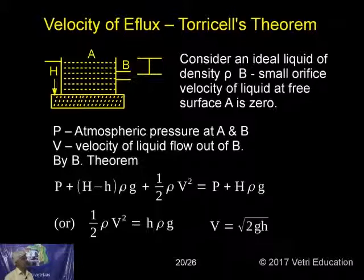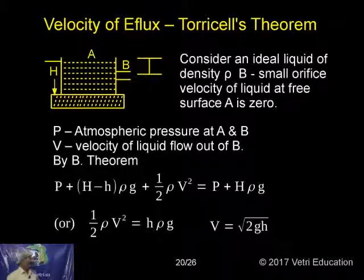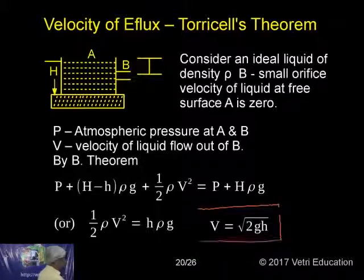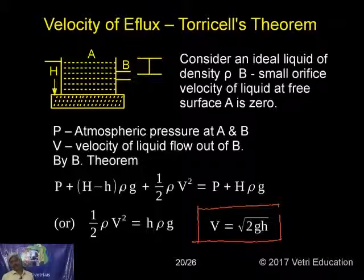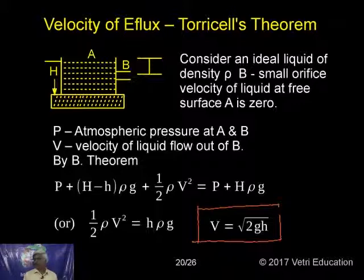That means: P plus H rho G plus half rho V squared equals constant. After water comes out: P plus small h rho G plus half rho V squared equals P plus H rho G. Therefore half rho V squared equals H rho G, giving velocity equals root of 2GH. Very similar to a body thrown vertically: V squared equals U squared plus 2AS; U becomes zero, so V squared equals 2GH, therefore V equals root of 2GH.